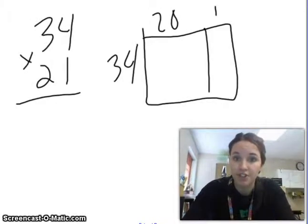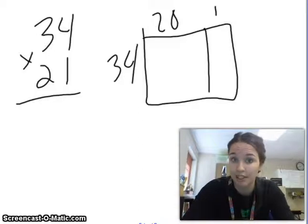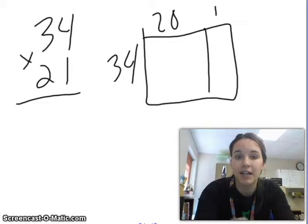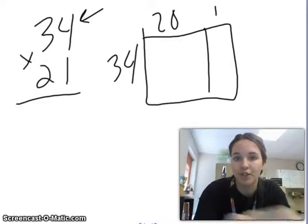Okay, first thing we have is a two-digit by two-digit multiplication number sentence. So we have 34 times 21. Now when we do the standard algorithm, really what we're doing is we're going to be finding two partial products. The way that I like to think about it is we're going to keep that top number just the same, but we're going to split up that bottom number into tens and ones.